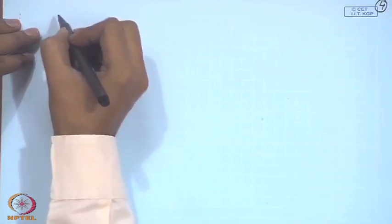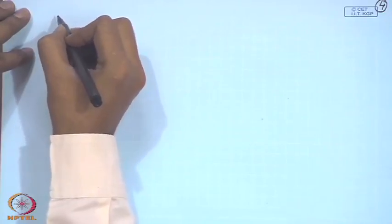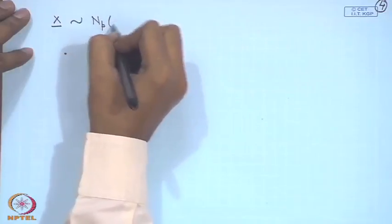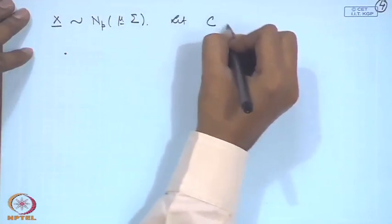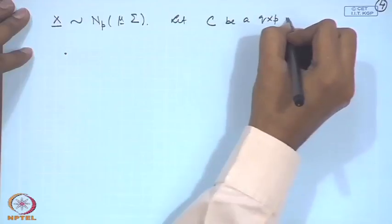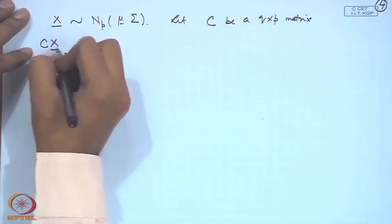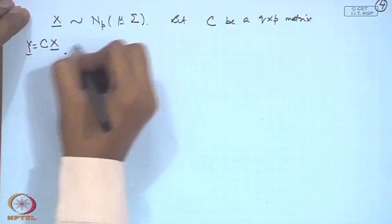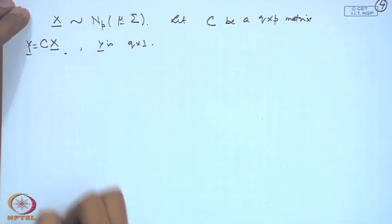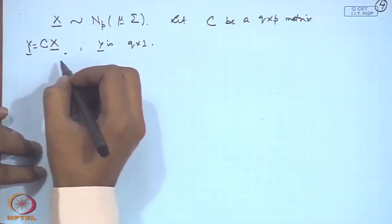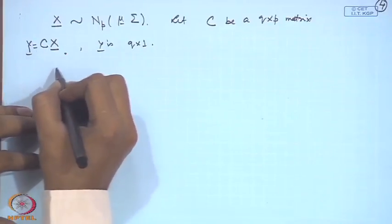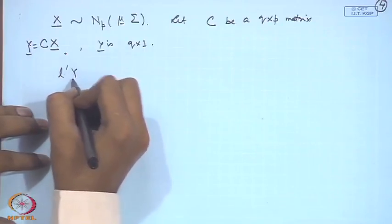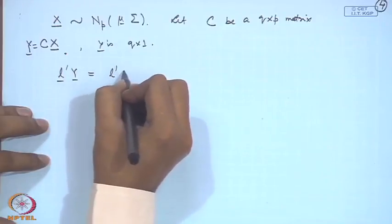Suppose x follows Np(mu, sigma) and let C be a q by p matrix. Define y = Cx, so y is q by 1. Consider linear combinations of y: l'y = l'Cx. This can be written as l_1'x where l_1 = C'l.